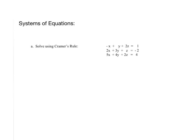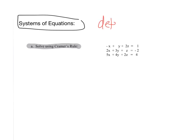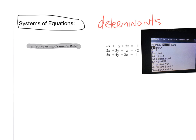For our first matrix review problem, we're going to be reviewing the three different methods for solving systems of equations. The first technique we'll use is Cramer's Rule, which is a method of solving systems of equations that uses determinants — values of square matrices. To calculate the determinant of a matrix, go to the matrix menu on the calculator, which is 2nd then inverse, move the cursor over to math, and then option one is the determinant.